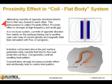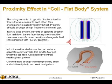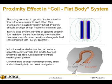Proximity effect: in a coil-flat body system, alternating currents of opposite directions tend to flow in the way closest to each other. This phenomenon is called the proximity effect. Proximity effect is stronger at high frequency and small gap. In a two-bus system, currents of opposite direction flow mainly on the surfaces facing one another. An induction coil located above the part surface generates eddy currents that tend to flow just under the coil face. Coil geometry controls the resulting heat pattern; concentrators strongly increase proximity effect and additionally help to control the heat pattern.